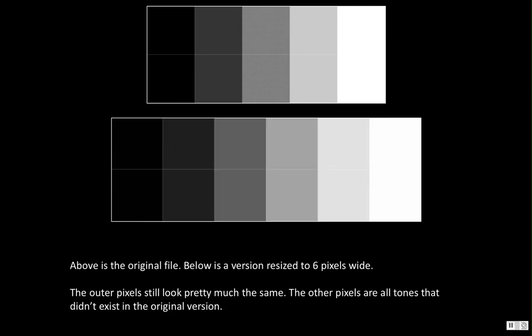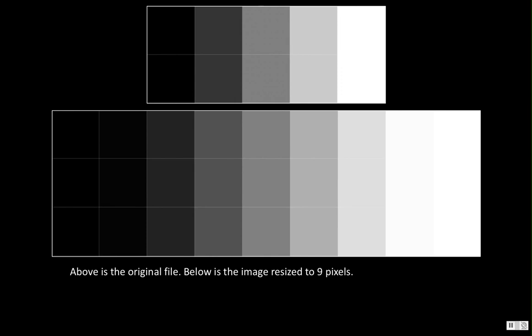What happens if we resize that original 5-pixel image to 6 pixels across? We still have black on the outside and white on the outside, but the 3 middle pixels now have to become 4 pixels. Photoshop calculates all new pixels — each slightly different in shade — to create a gradient that is now 6 pixels wide. Resizing to 9 pixels wide shows even more intermediate shades that Photoshop has to create. From a distance it looks similar, but the point is that you are recalculating all of your pixels.